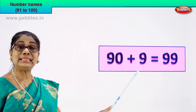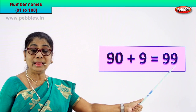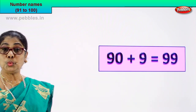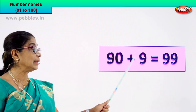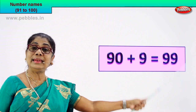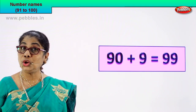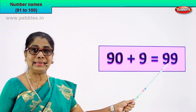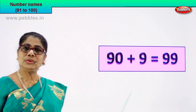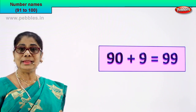Let's go to the next numeral. 90 plus 9 is equal to 99. 9 and 9 — 99. Good. Now 99 is the number — what about its name? We learn to write the number's name. You know 90, you know 9. Ninety-nine — ninety-nine.